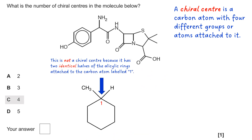When thinking about ring structures, you have to treat each part of the ring separately. If we take the carbon labeled as number one, the left-hand side and the right-hand side are considered the same group. Even though they join up at the end, they're treated as two halves and they're symmetrical, so this is not a chiral center.